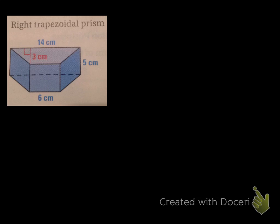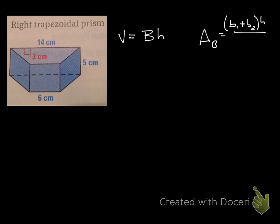In this example, we're going to find the volume of a right trapezoidal prism. Based on our volume of a prism theorem, the volume equals the area of the base times the height. The area of the base — which I'll call A sub b — is going to be the area of a trapezoid: base one plus base two, times the height, all divided by two.